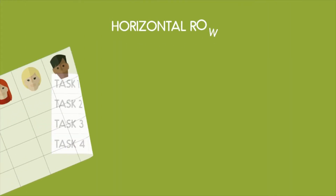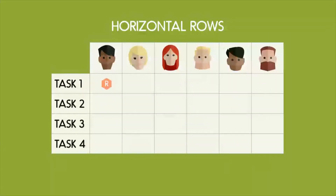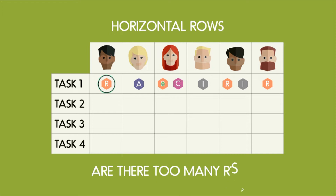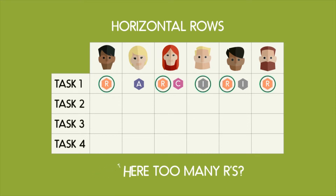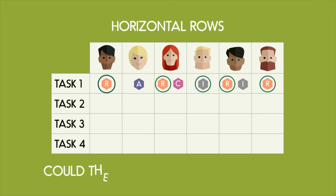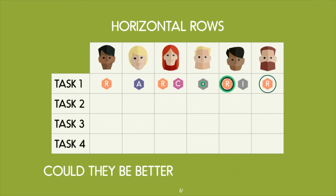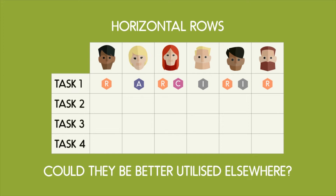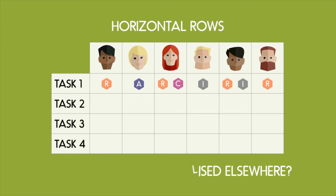Firstly, looking at each row horizontally. If there are too many Rs in one row, you have to question yourself whether too many people are involved on this specific task. Can they be better utilized elsewhere on the project? Would this cause potential conflict and duplication?